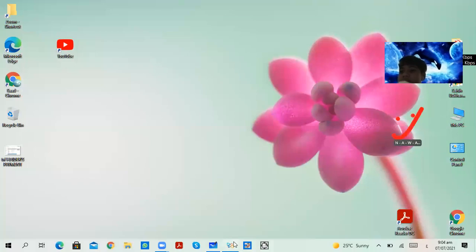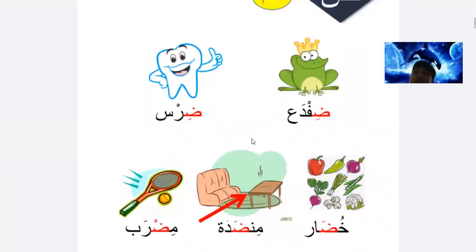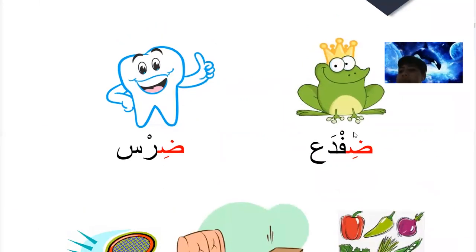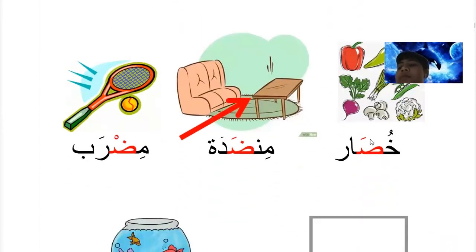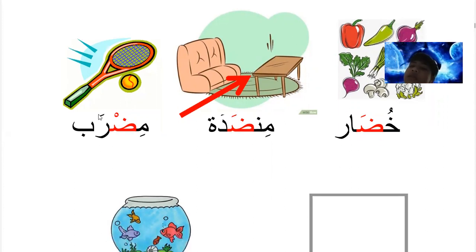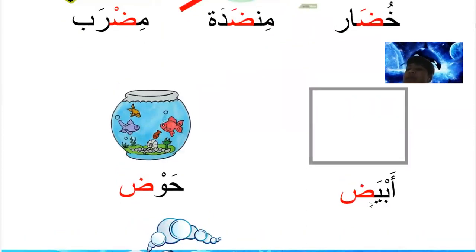Bismillahirrahmanirrahim. Today we'll start the letter Dhad. Dhif, dha - frog. Dirs, dirs - tooth. Khodar, khodar - vegetable. Good. A table, or a mat. Midrab, midrab - a tennis racket. Abyad, abyad - square, white, white. Hawd, hawd - fish.